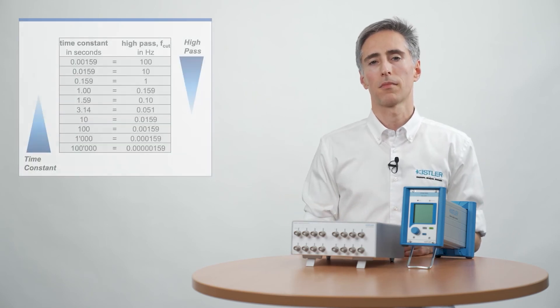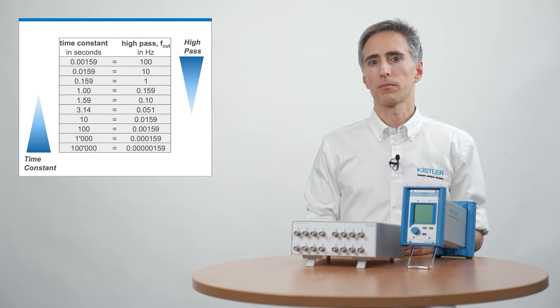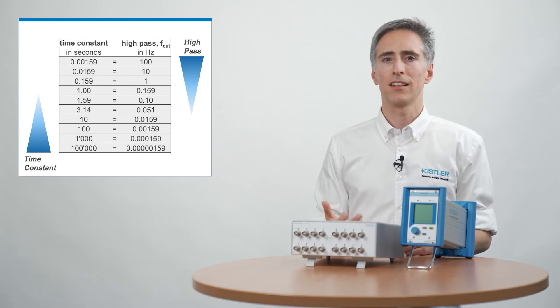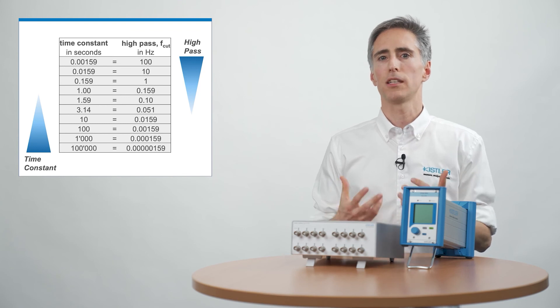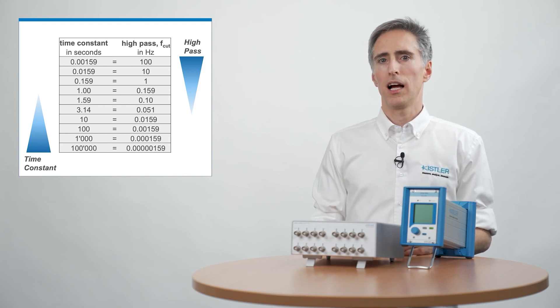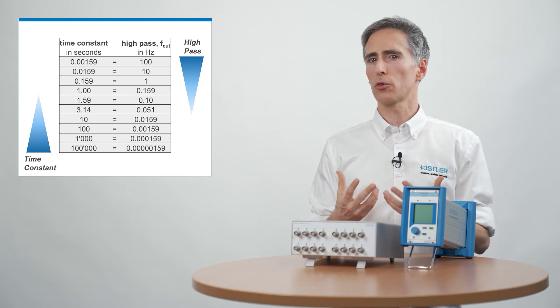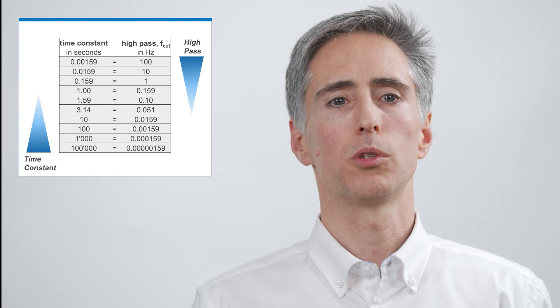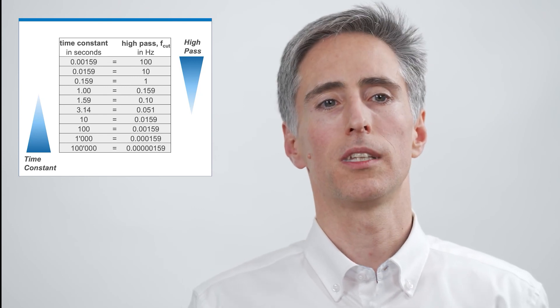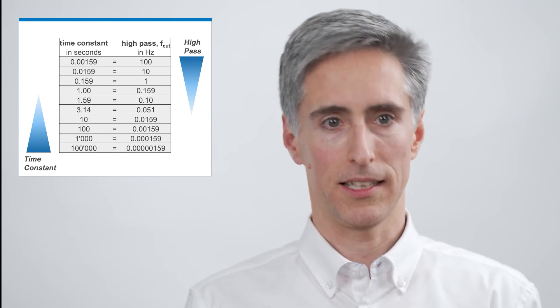But why do we talk about a time constant although it's basically a high-pass filter? The reason is the dimension of the numbers. A high-pass filter of 10 or 100 Hz is kind of intuitive to understand. However, at least my imagination for a few milli or even microhertz is quite limited. So in those regions it's much more intuitive to talk about the time constant in seconds.